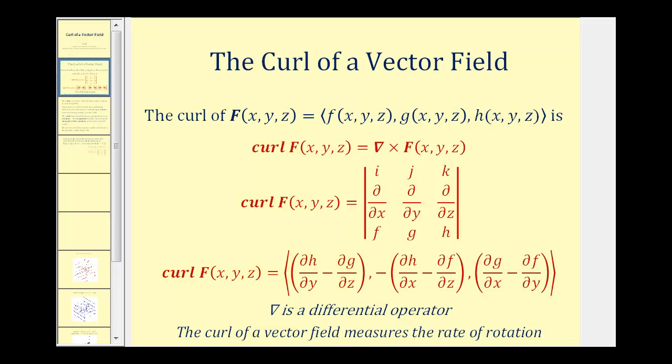The curl of the vector field F is equal to the cross product of the differential operator — which you can think of as a partial derivative operator — and the vector field F. We can determine this cross product by evaluating the three by three determinant where the first row is i, j, k. The second row comes from the differential operator with the partial derivatives with respect to x, y, and z. The third row comes from the components of the vector field F. If we evaluate this determinant, we get a vector field with x, y, and z components as shown.